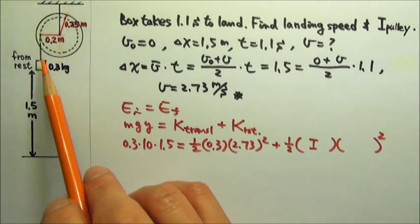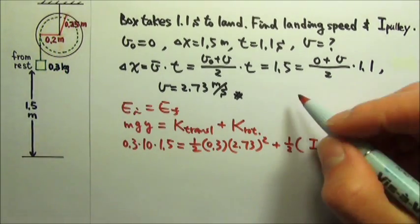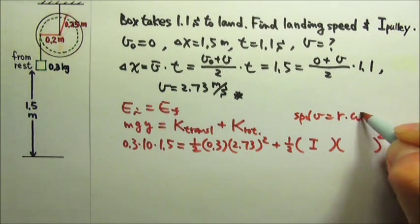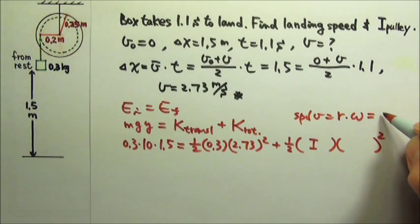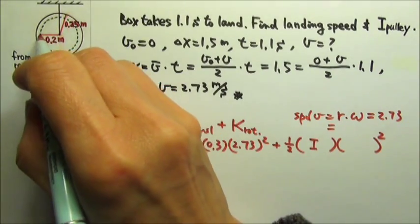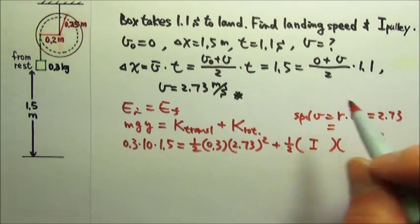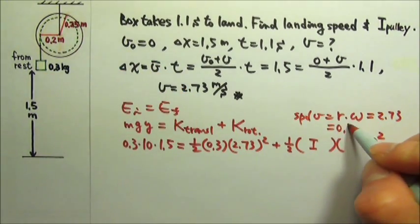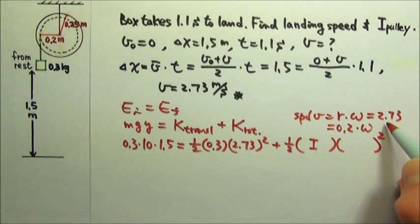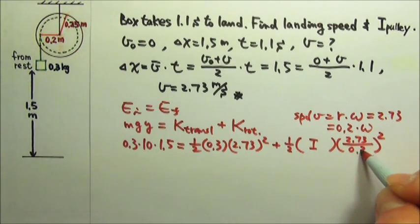The pulley is rotating about a fixed axis, and the string does not slip. So there's a fixed relationship between the translational motion and the rotational motion. The speed is r times omega. So the speed is 2.73, which should equal r, the radius where the string wraps around, which is 0.2 meters, not 0.25 meters. So r is 0.2 times omega. So what is omega? It is the speed 2.73 divided by r, so it is 2.73 divided by 0.2.